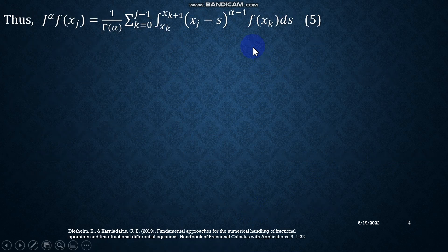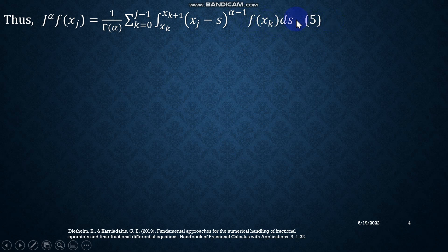So now, if you replace the function by this constant f(xₖ) in the previous equation that we had just obtained in our previous slide, then you will get f(xₖ) and hence you will have this equation 5.